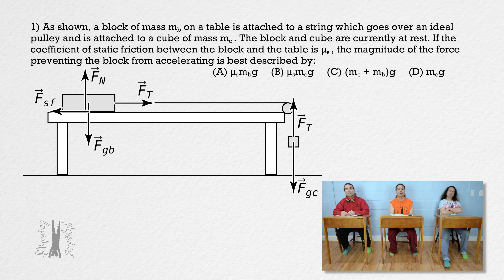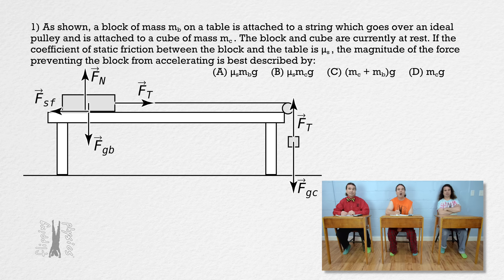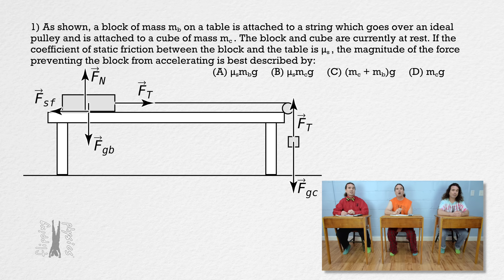There is a force normal from the table acting up on the block and a force of static friction from the table acting to the left on the block. We need to sum the forces to solve for the force of static friction. We could sum the forces on the block in the x direction and then on the cube in the y direction, but it will take fewer steps if we sum the forces on the block and cube simultaneously, defining positive as to the right on the block and down on the cube.